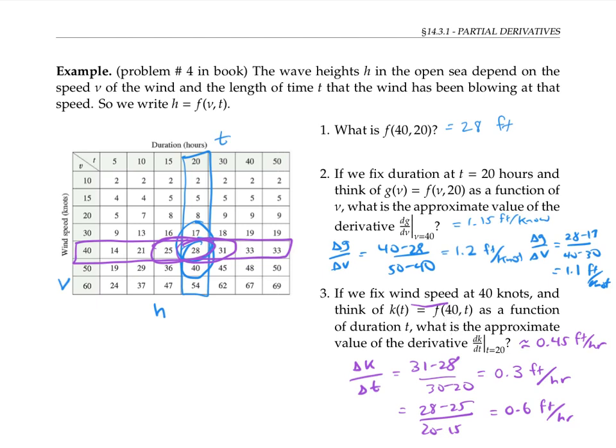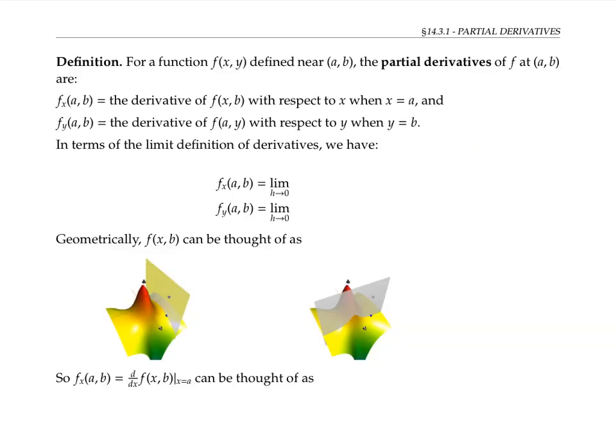Holding one variable constant and taking the rate of change with respect to the other variable is exactly the idea behind partial derivatives. For a function of two variables, f(x,y), defined near the point (a,b), we can define the partial derivatives of f at the point (a,b) as follows.